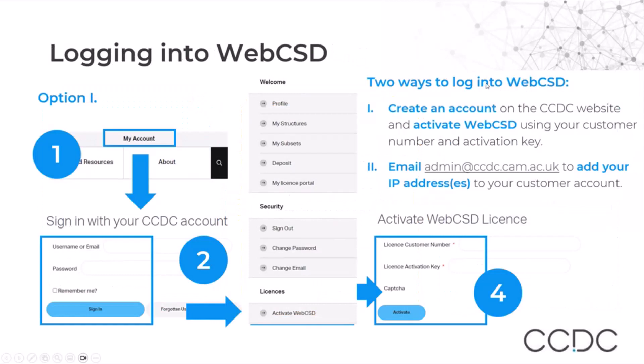To get access to the full range of options in web CSD, you need to activate your account. There are two ways to log in. First, you create an account on the CCDC website and activate web CSD following the instructions under licenses, activate web CSD. For this, you will need your license customer number and activation key. The other option is to email our admin team and ask them to add your IP addresses to your customer account.